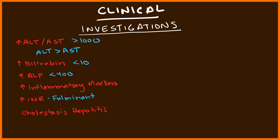It's also important to be aware of cholestatic hepatitis, which occurs in less than 5% of patients. These patients have Hepatitis A virus, but the labs are more consistent with some type of biliary disease — bilirubin and ALP are very elevated, whereas AST and ALT are only modestly elevated. You might get an ultrasound and won't find any gallstones, no dilated common bile duct, and no evidence of pancreatitis. When you come across this scenario, it's important to consider Hepatitis A virus.